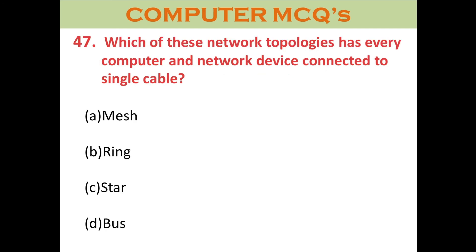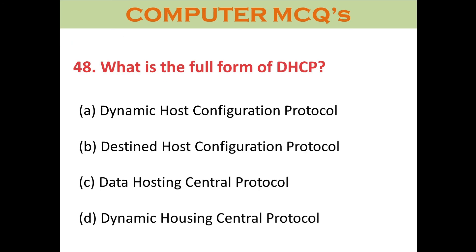Question forty-seven: Which network topology has every computer and network device connected to a single cable? A. Mesh. B. Ring. C. Star. D. Bus. The right answer is D: Bus.